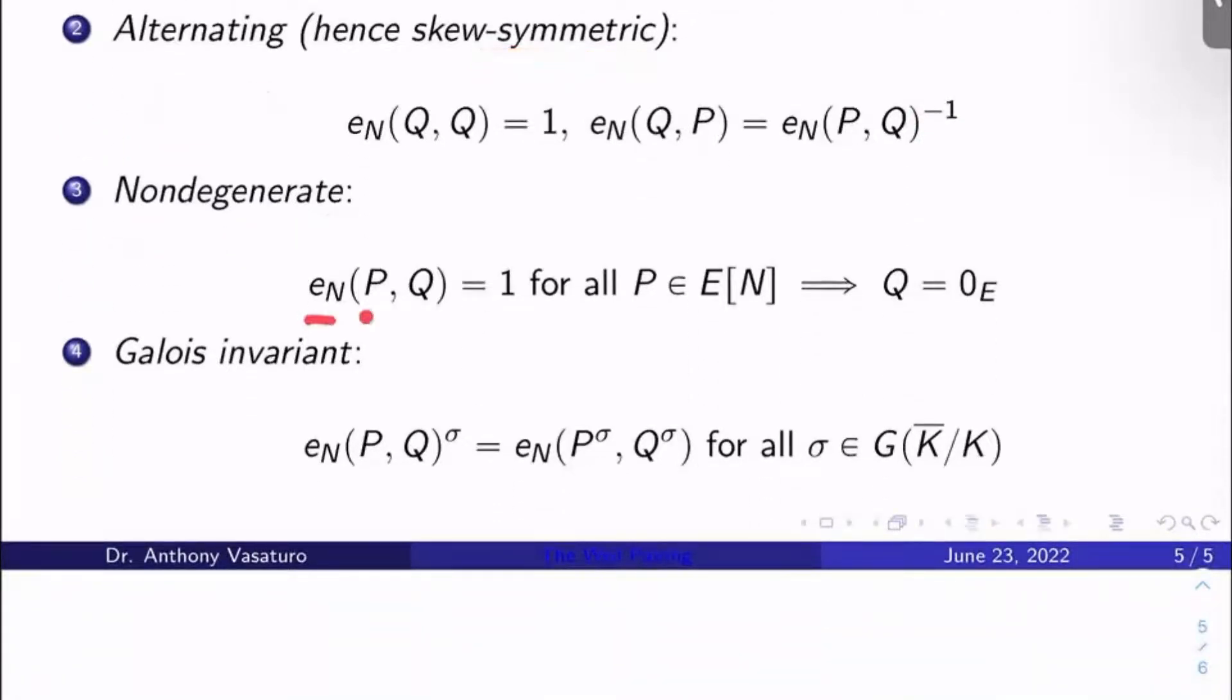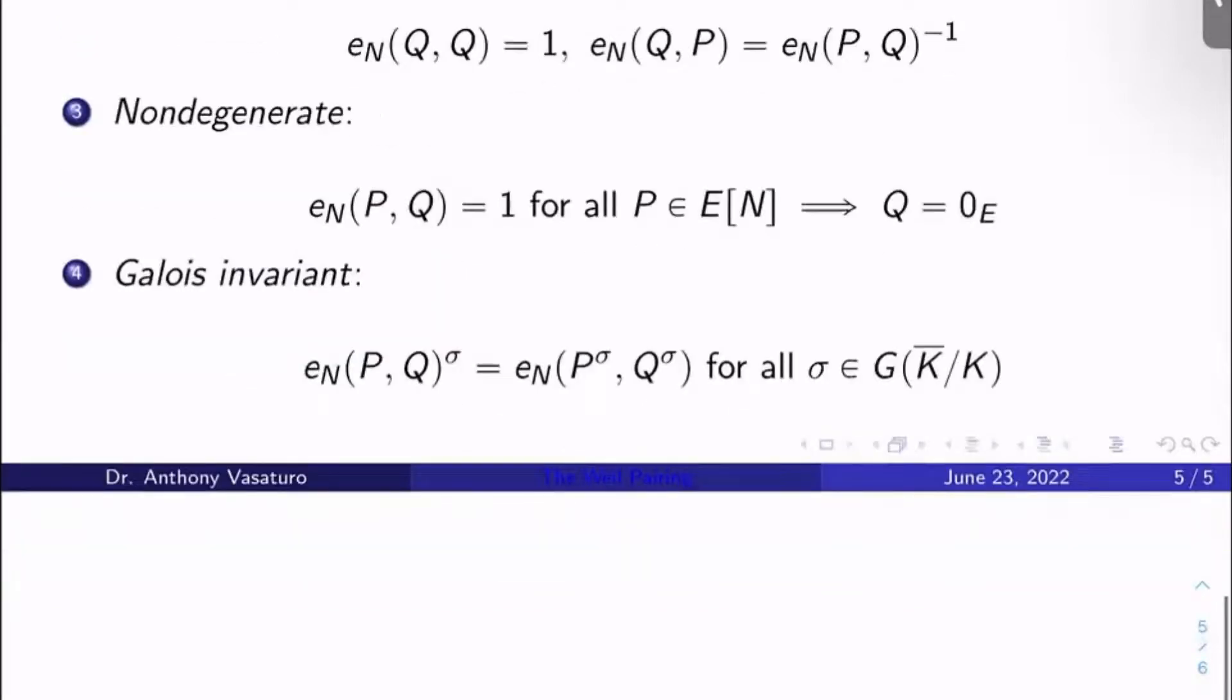It's non-degenerate, which is important. So e_N(P,Q) is one. If that happens for all end torsion points P, it better be the case that Q is just zero. We don't want trivial output for all inputs unless the other input is zero. And then very importantly, last thing, well, second to last thing, this is a Galois invariant pairing.